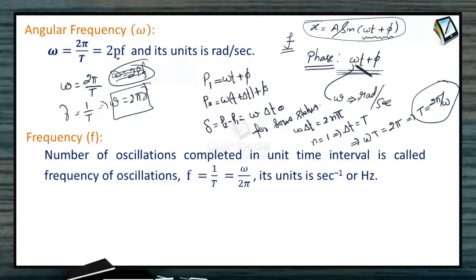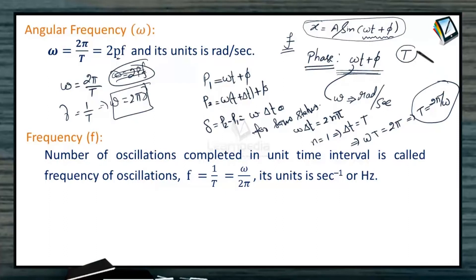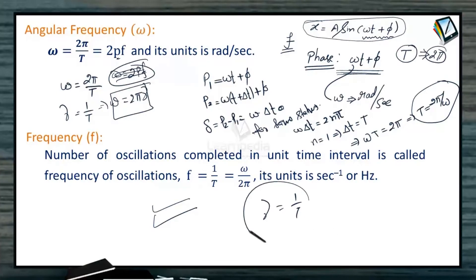Omega here is angular frequency, whose unit is radian per second, so omega times time gives radians. The time period T corresponds to a phase change of 2 pi — capital T is the time interval that brings a phase change of 2 pi in the motion. Frequency is 1 divided by capital T.